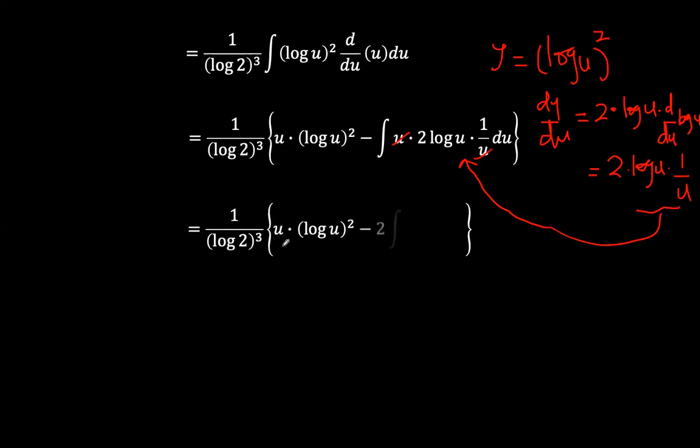And so we are left with 1 over natural log 2 to the power 3 times natural log u squared minus 2 integral log u. And so we will repeat the same process where there is a minus times 1 there. There is a hidden times 1 there. And so we have natural log u times the derivative of u, which is the same as 1.